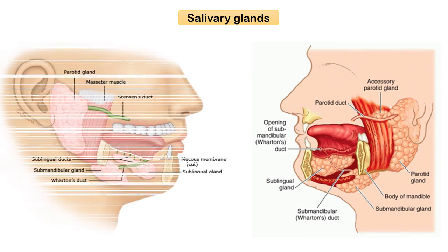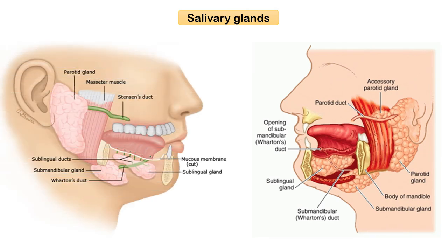The salivary glands secrete saliva into the oral cavity through ducts. Stenson's duct corresponds to the parotid gland. It extends from the lateral surface of the gland anteriorly, moves across the masseter muscle, pierces the buccal fat pad and the buccinator muscle, and opens into the oral cavity at a papilla opposite the crown of the second maxillary molar tooth.